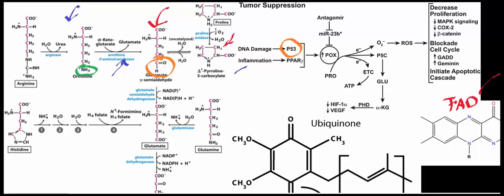One other interesting thing about proline oxidase: it's thought that part of the mechanism of conditions like seasonal affective disorder and schizophrenia involves deficiency of proline oxidase. You can find theories about this in the literature — could problems with apoptosis potentially affect conditions like schizophrenia and depression?